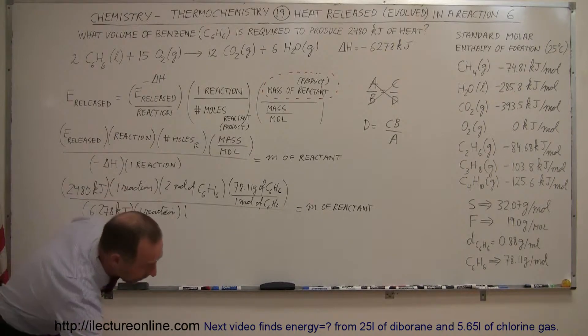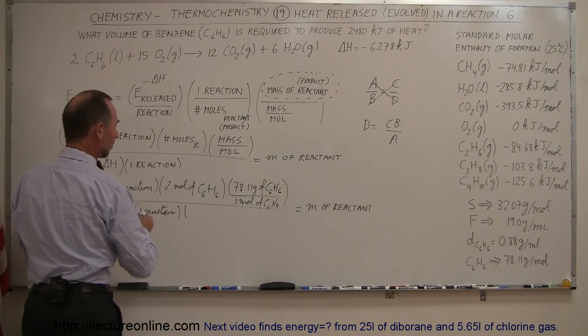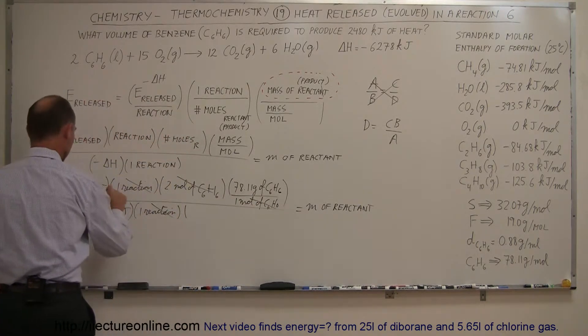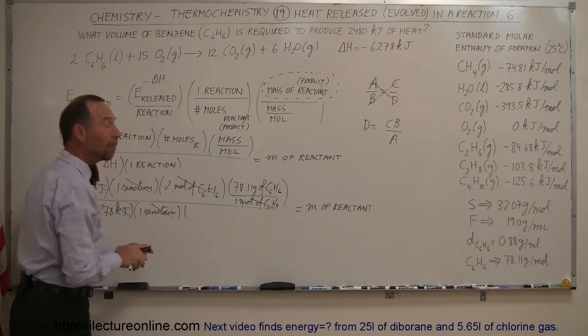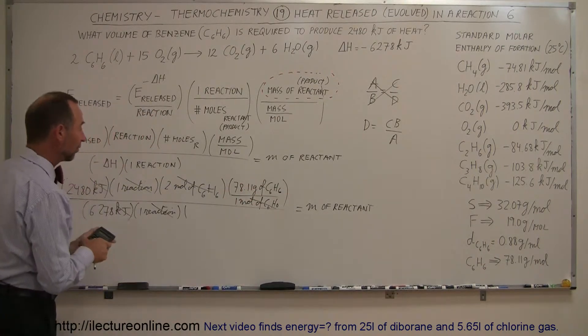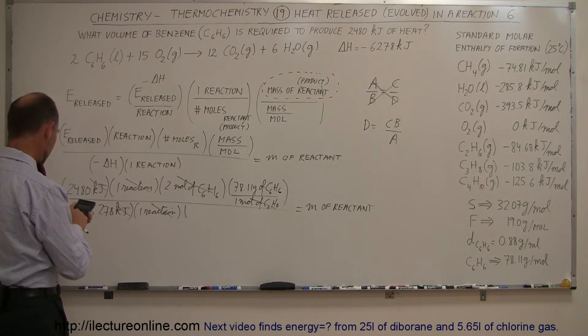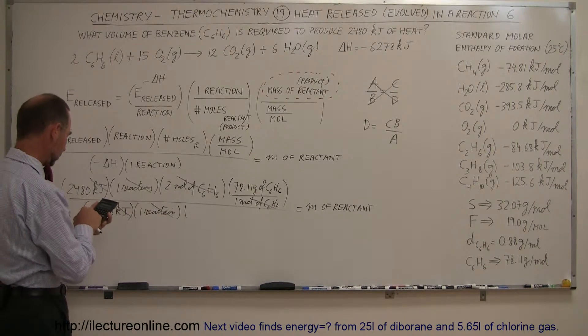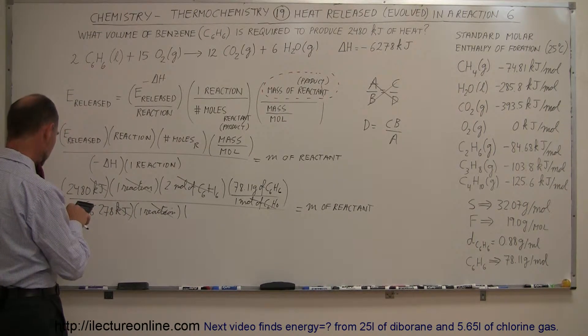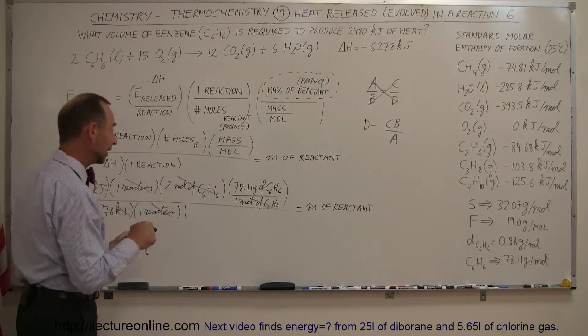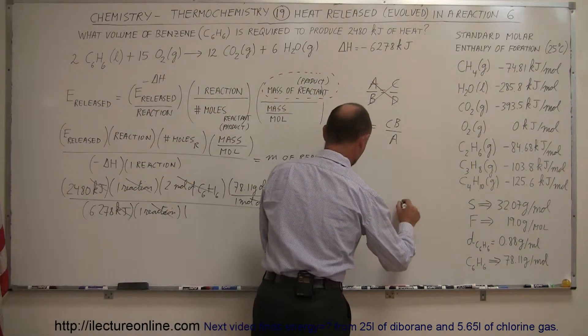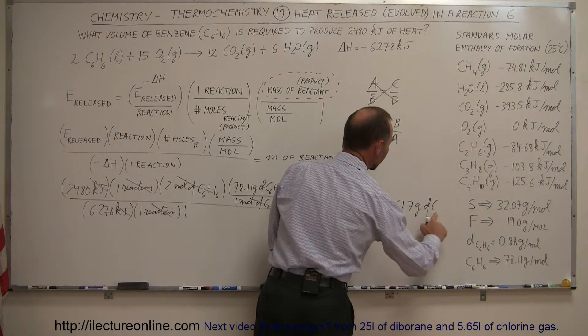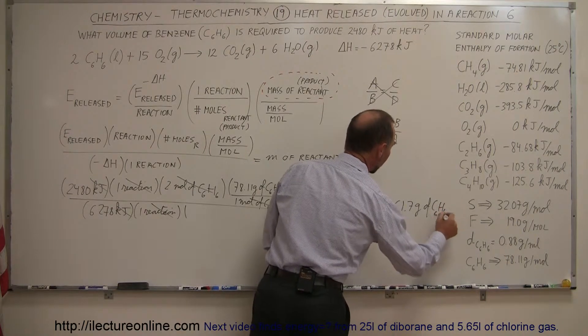So let's get a calculator and figure this out. Unit-wise, notice that the moles cancel out, so the moles cancel out, the reaction cancel out, kilojoules cancel out, and we're left with the mass of the reactant in terms of grams of C6H6. So we have 2480 times 2 times 78.11 divided by 6278 equals, and that gives us a mass of 61.7 grams of benzene, C6H6.